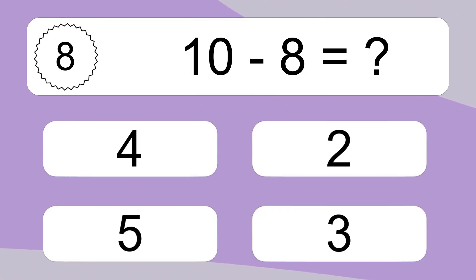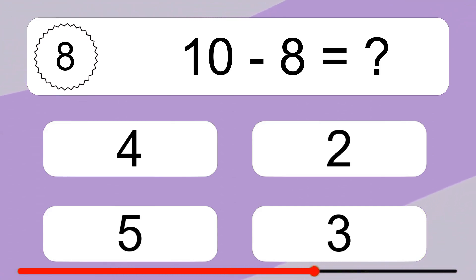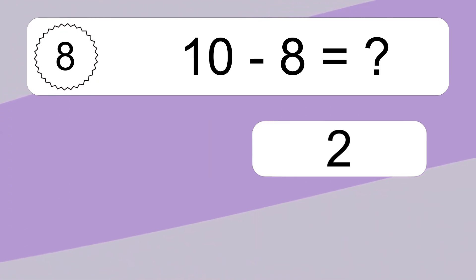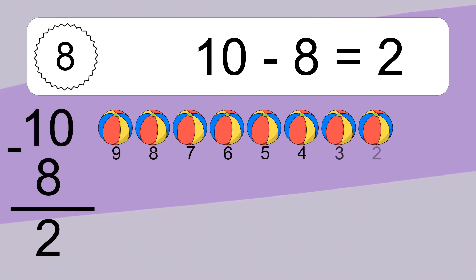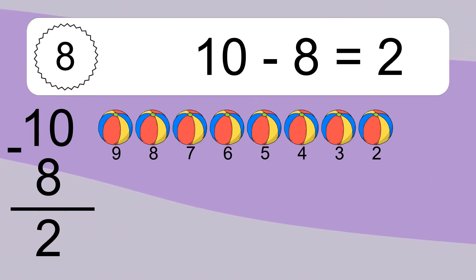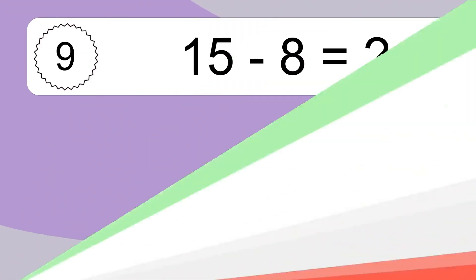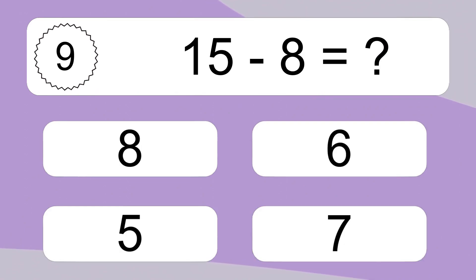10 minus 8 equals what? 10 minus 8 equals 2. Let's count it: 9, 8, 7, 6, 5, 4, 3, 2.